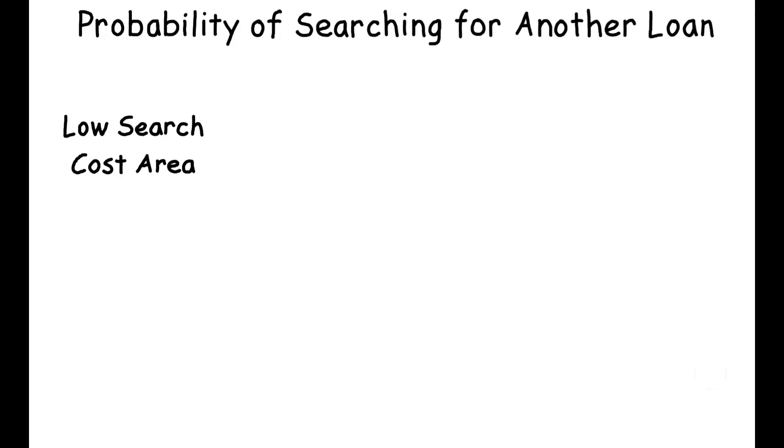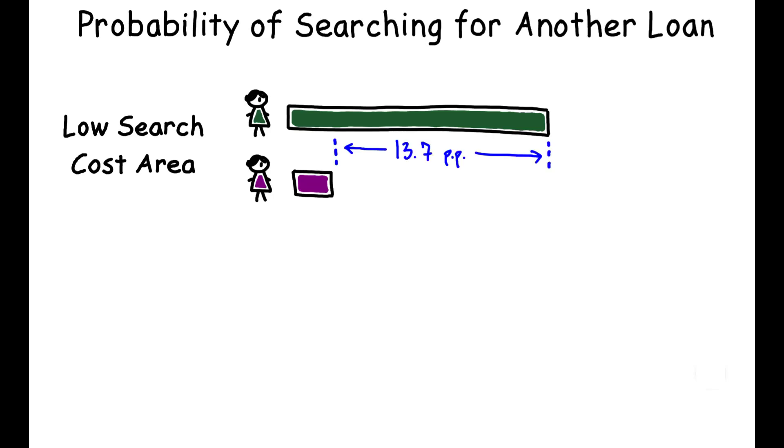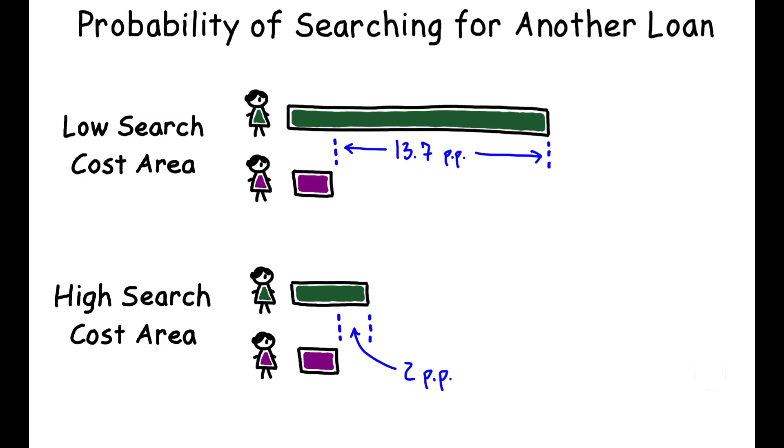In low search cost areas, borrowers who receive a relatively expensive loan offer are 13.7 percentage points more likely to engage in additional search relative to those who received a good offer. In high search cost areas, however, this difference shrinks to only 2 percentage points.